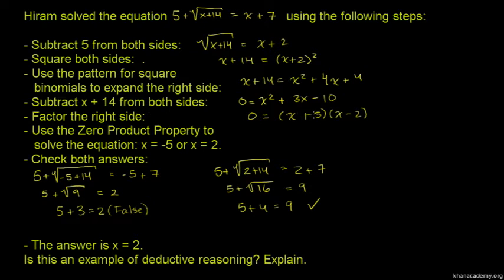Factor the right side: 0 = (x + 5)(x - 2). We can factor negative 10 as 5 times negative 2, which gives us these terms.